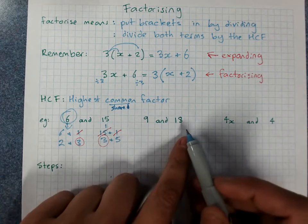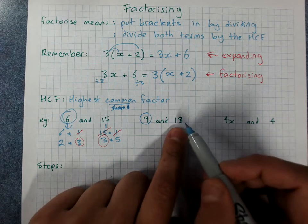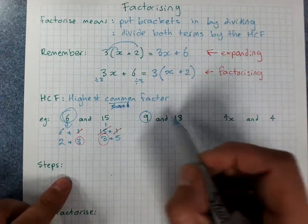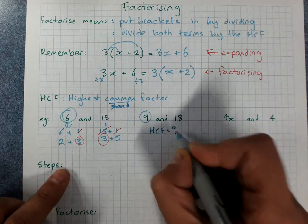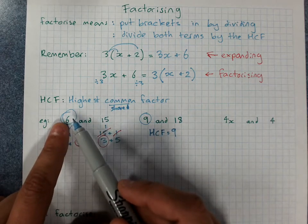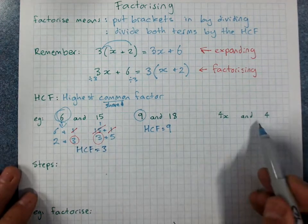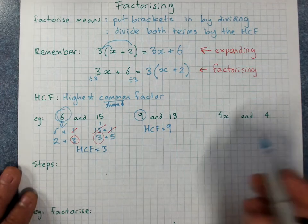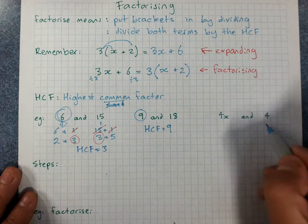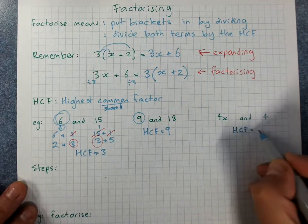So 9 and 18. Always start with the smallest number and check. Does 9 go evenly into 18? Yes, it does. Because 9 times 2 is 18. So 18 divided by 9 is 2. 9 goes into 18. I don't need to look any further. The HCF is 9. Whereas here, 6 doesn't go into 15. So I need to go to the next one down. 3. 3 goes into 15. HCF is 3. And here, 4x and 4. Now I've been tricky here and I'll put the x in. Because what goes into 4x? Well, 4 or x or 1. Does 4 go into 4? Yes. But the x doesn't go into both of them because there's no x over here. So the HCF here is 4.